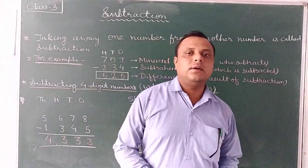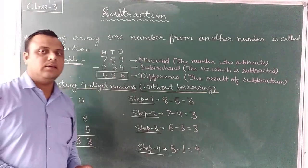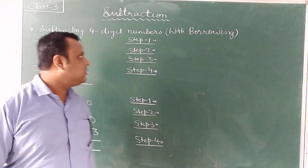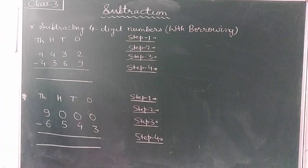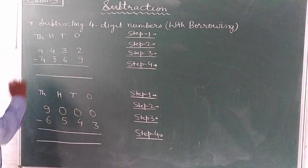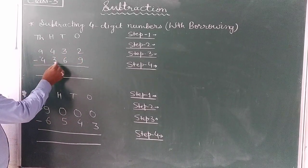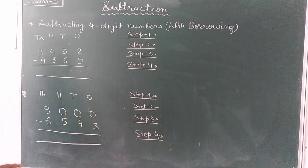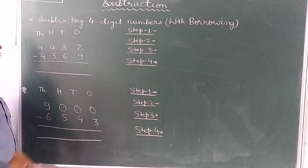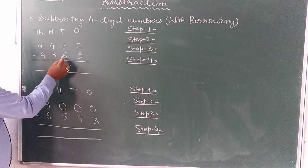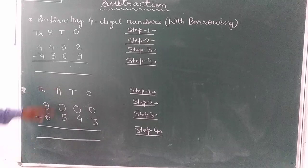Now students, we will learn subtraction of 4-digit numbers with borrowing. Two questions are given here. Question number 1: 9,432 minus 4,369. The minuend is 9,432 and the subtrahend is 4,369.